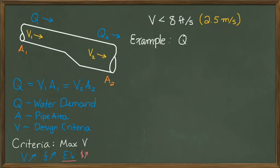For example, let's suppose we need to deliver 710 gallons per minute in a pipeline where the velocity does not exceed 8 feet per second.